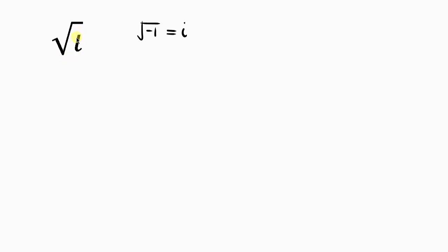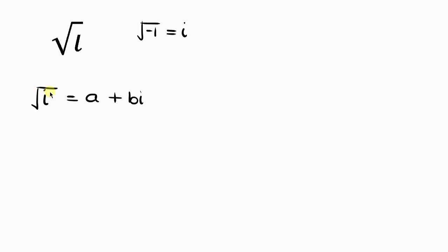For the sake of this question I'm going to be calling it i. Our first step will be to express the square root of i as the sum of a real number and an imaginary number — that is, a complex number. Our next step will be to take the square of both sides in order to remove the square root.